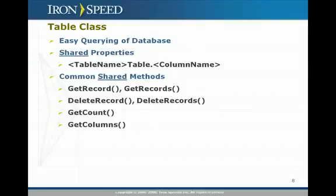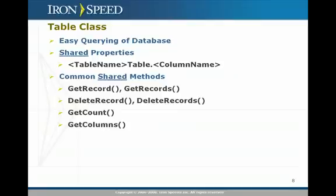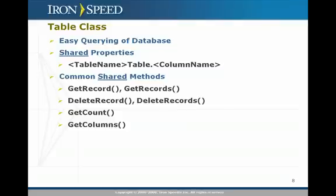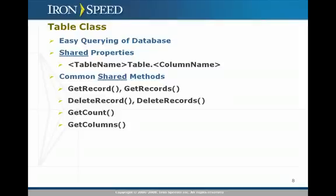The table class allows easy querying of the database. It has a number of properties and methods. You have access to every column as a shared property — for example, EmployeesTable.FirstName to refer to the first name column, and then access properties like .Name or .DataType, so you could do EmployeesTable.FirstName.DataType to get the data type for that field. Common shared functions include GetRecord and GetRecords, which both take a where clause and return data. You can also do DeleteRecord, GetCount, and GetColumns.